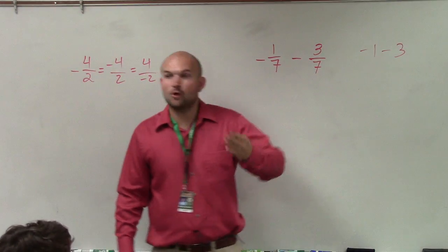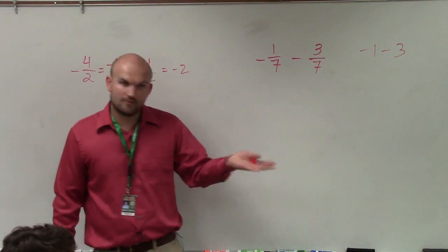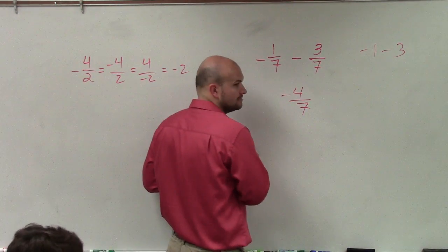So think about if you owe $1 and you borrow 3 more dollars—therefore, you now owe $4. So the answer is negative four-sevenths, OK?